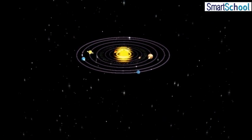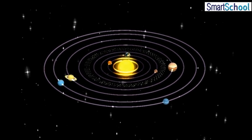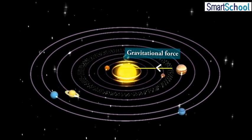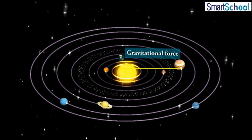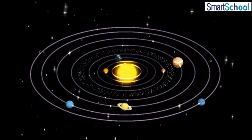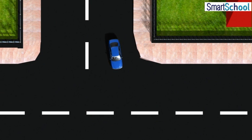The centripetal force for motion of a planet around the Sun is the gravitational force on the planet due to the Sun. For a car taking a circular turn on a horizontal road, the centripetal force is the force of friction.